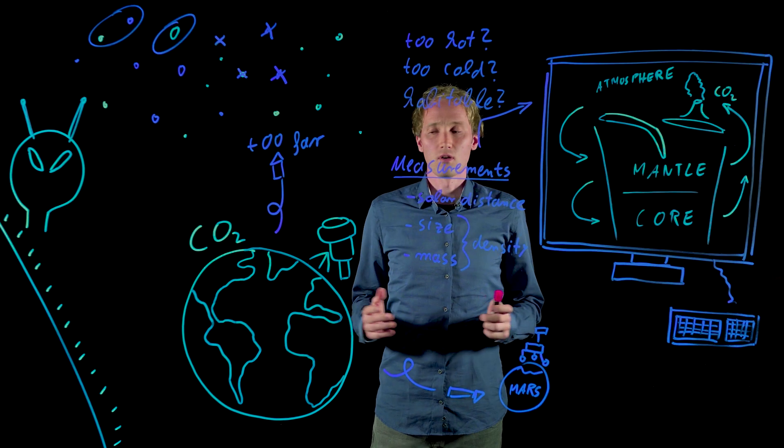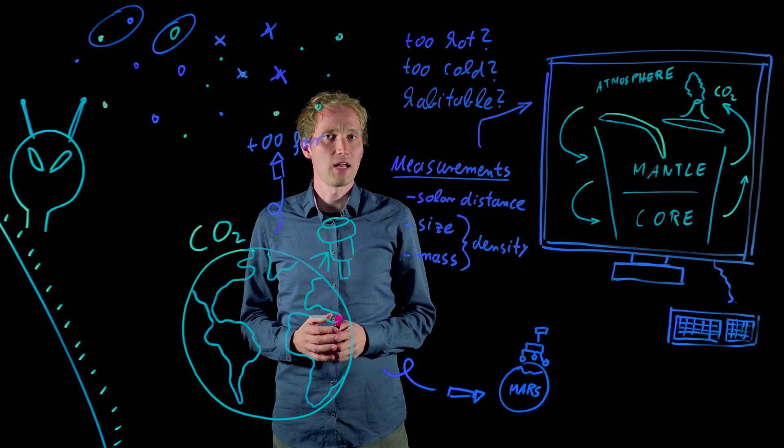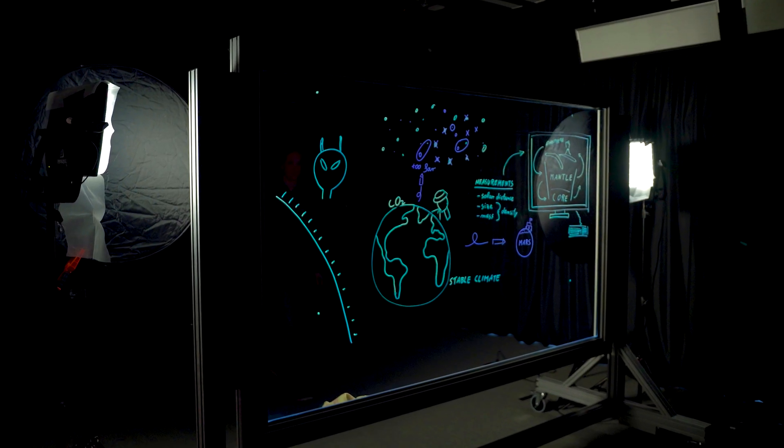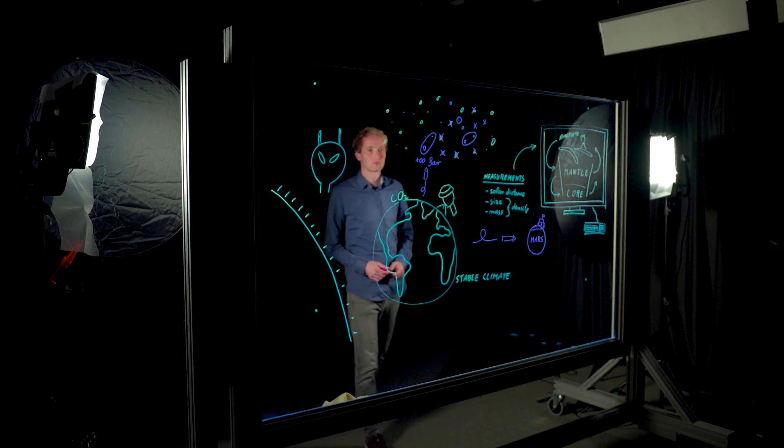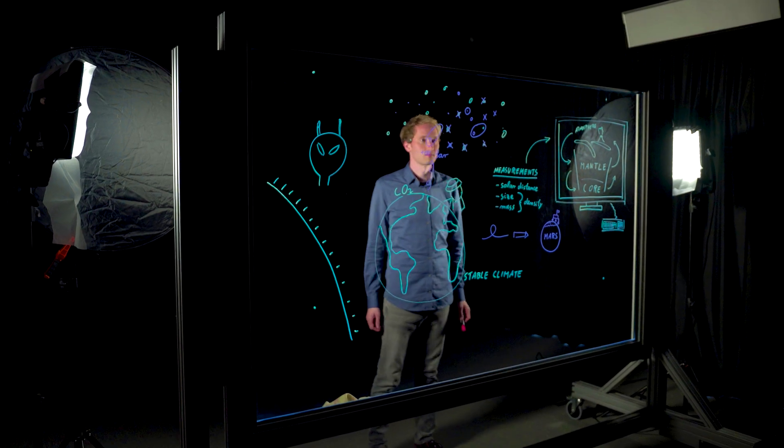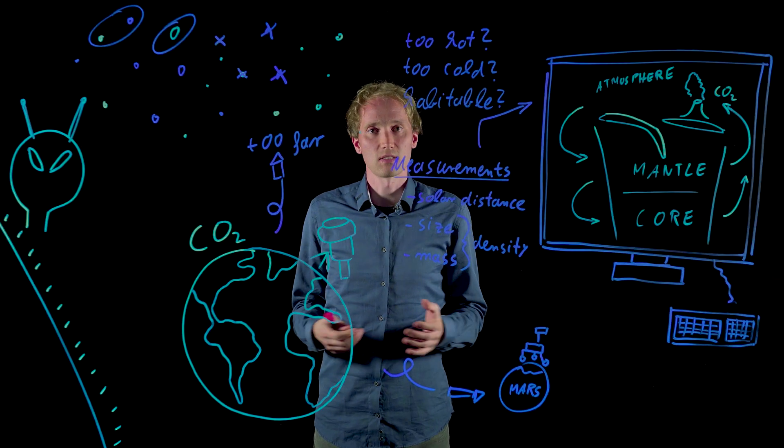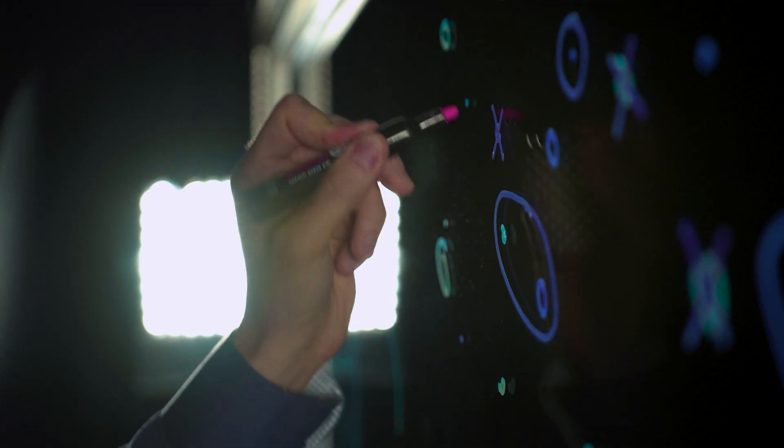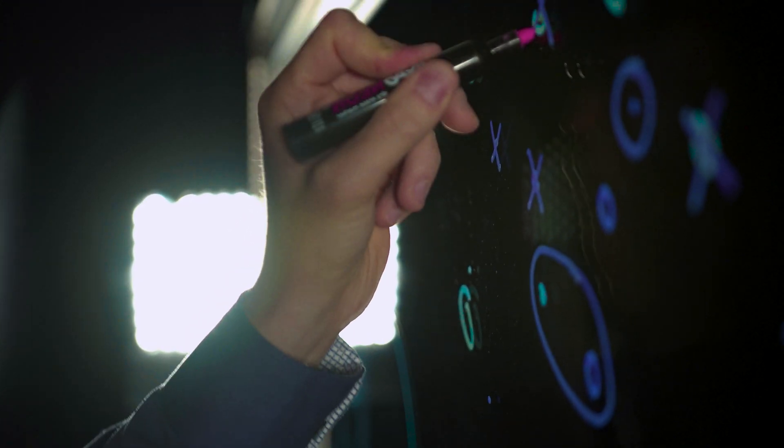So all in all, the Earth is a good example of a habitable planet, and the only one so far. But that doesn't mean that other habitable planets are similar to the Earth. They could have different sizes, masses, or different distances to their host star. But still, they will follow the same mathematical equations.